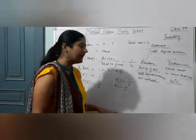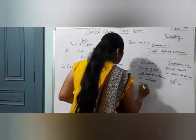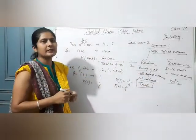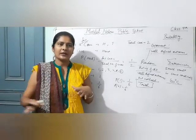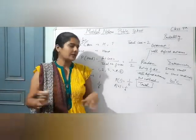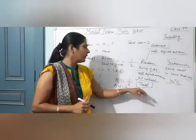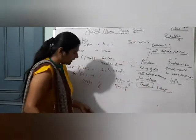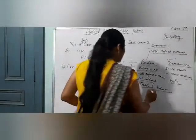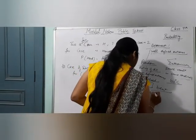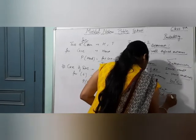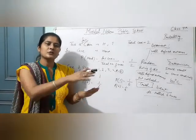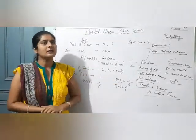इसके बाद आता है हमारा Trial. Trial का मतलब — अगर मैं एक बार dice को फेंक रही हूँ, that is my trial. Experiment जब मैं कर रही हूँ — मैंने experiment चार बार किया है, तो जो बारियाँ होती हैं, turns कितनी बार किया है, that is the trial. उसके बाद होता है हमारा Event — collection of some outcomes of experiment. For example, dice rolled 6 times — यह मेरा event होगा, dice को 6 बार roll करना और उसका outcome note करना, that is the event.